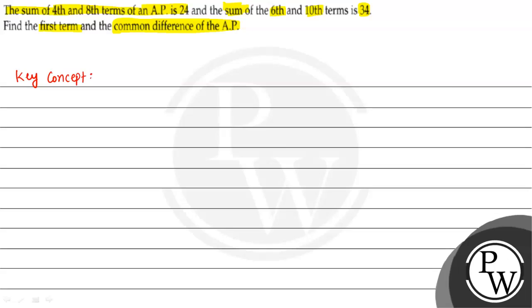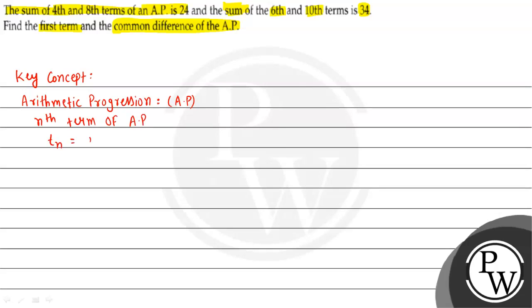The key concept to solve this question: an arithmetic progression is a sequence in which the common difference between two consecutive numbers is always constant. The nth term of an AP is given by TN = A + (N - 1) × D. We will use this formula to find the nth term.